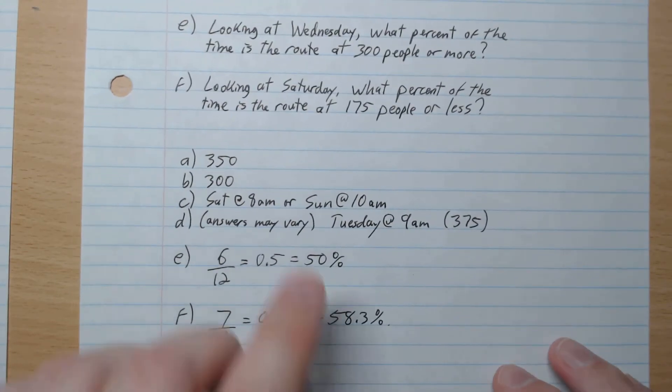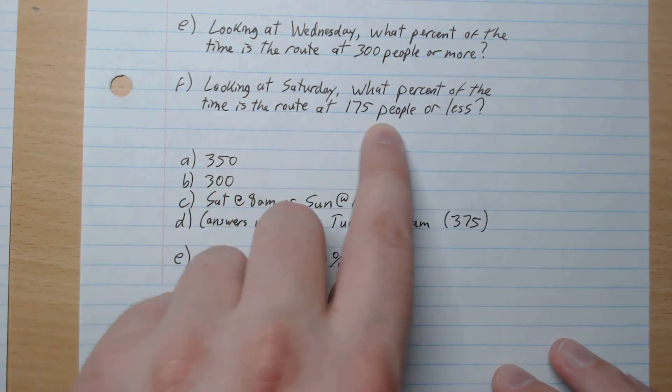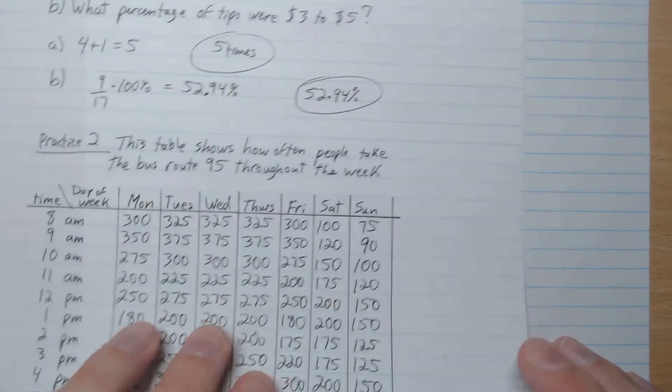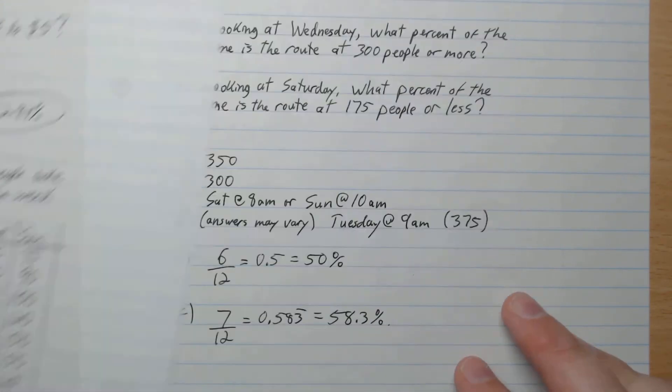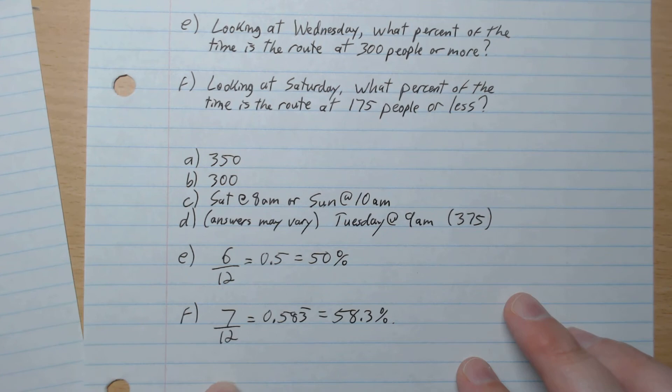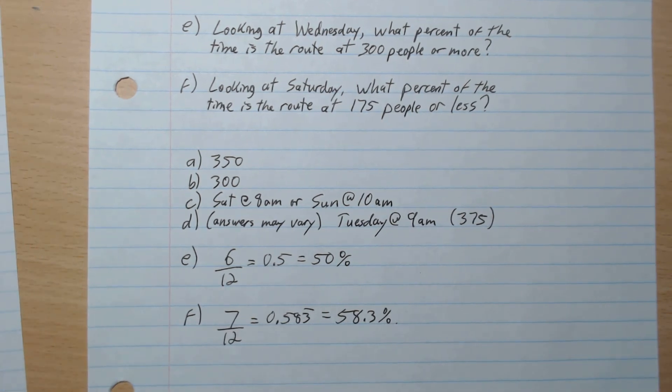And then F, looking at Saturday, what percent of the time is the route at 175 people or less? So we go ahead, look at Saturday, 175 or less, we count that up. And that gives seven, total out of 12. And so that percentage is 58.3. And that's it, it's that easy. I'll see you guys in the next video.